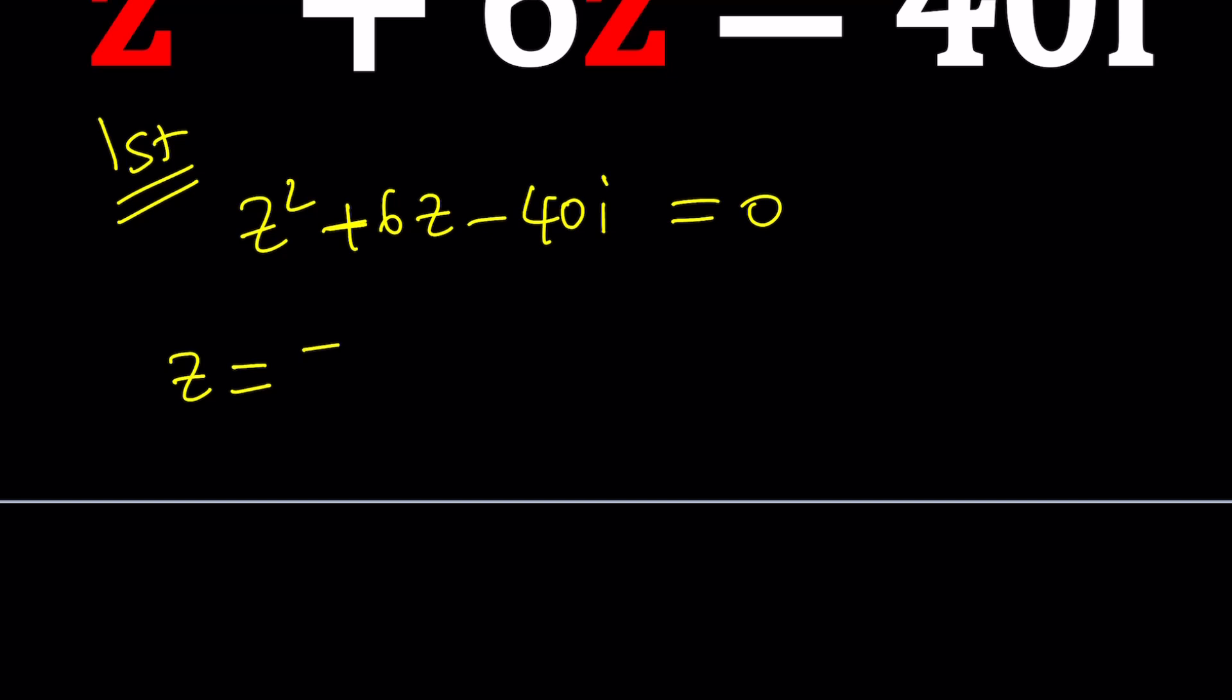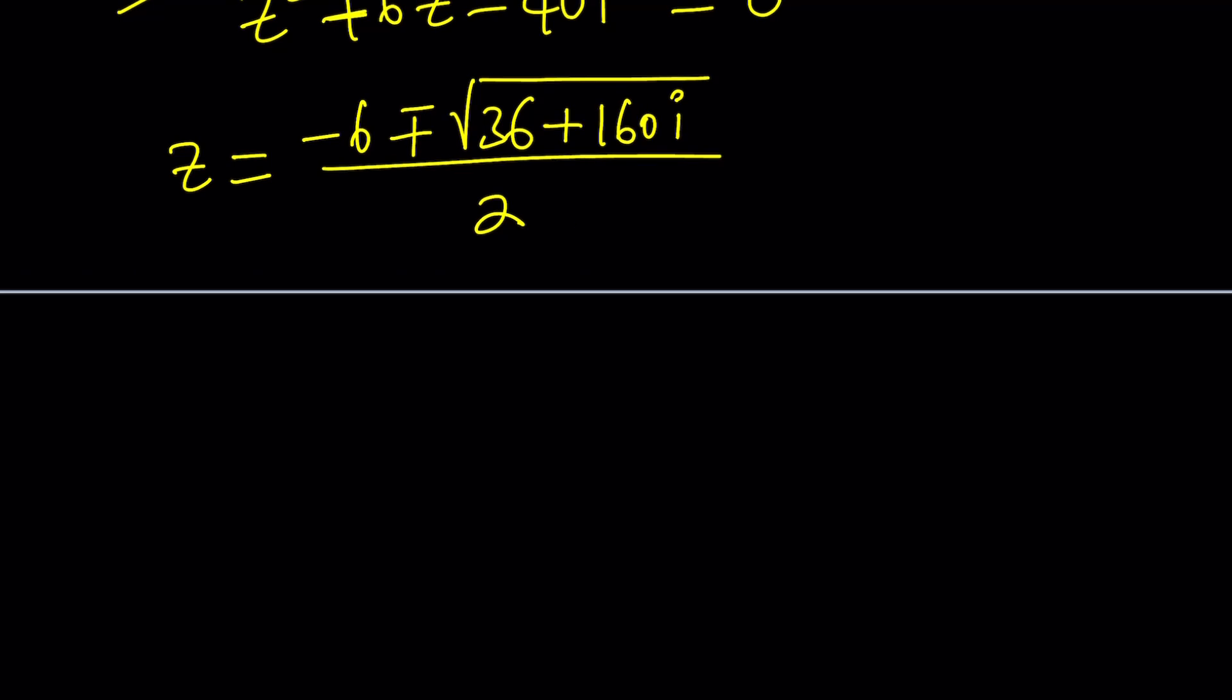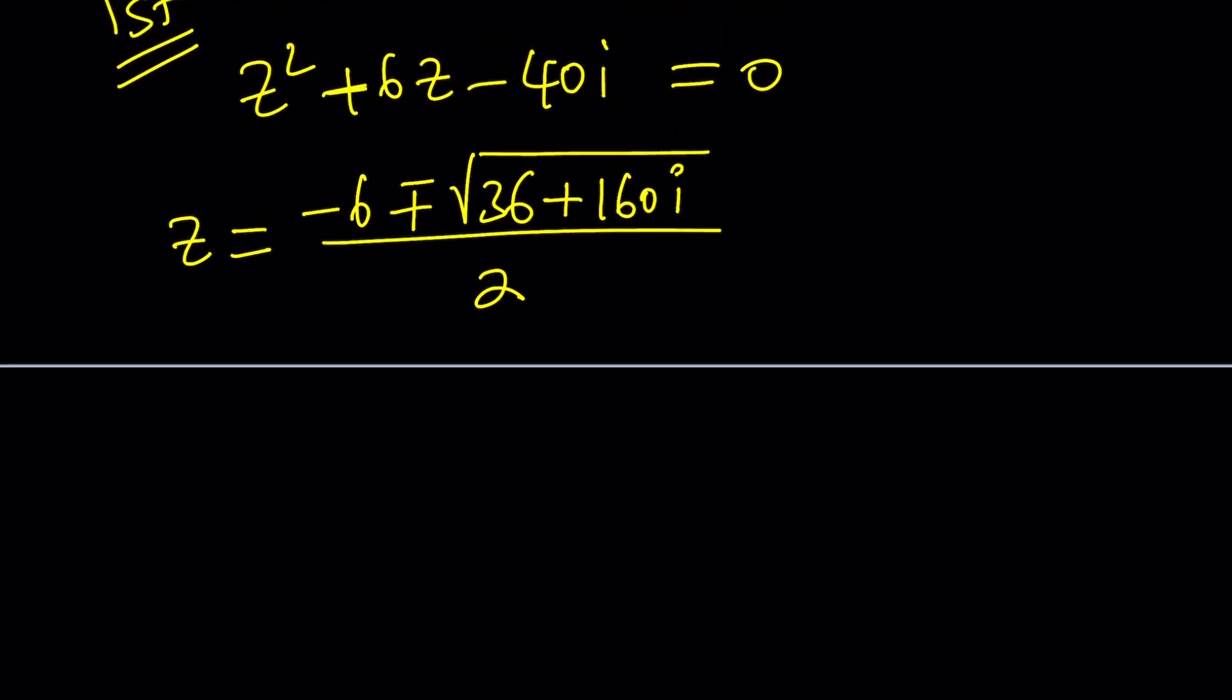And that will be negative b plus minus the square root of b squared minus 4ac. Minus is going to turn into a plus and we're going to get 160i because a is 1. And all of that is divided by 2a, which is 2. Now we can go ahead and simplify this. We need to square root a complex number. So that's going to be fun. But let's go ahead and take out something first.